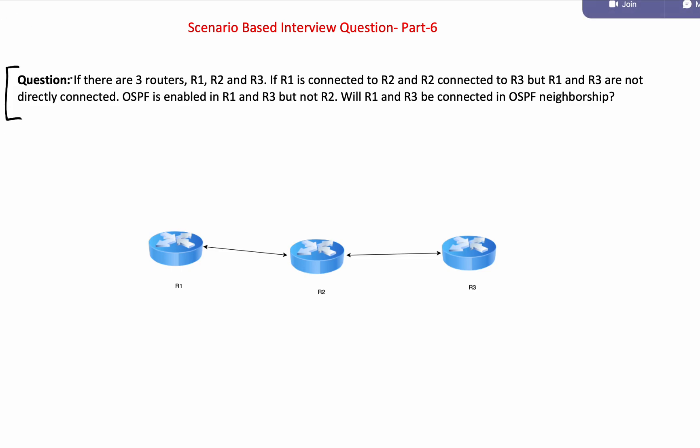Coming to the question: if there are three routers R1, R2 and R3, if R1 is connected to R2 and R2 is connected to R3 directly, but R1 and R3 are not connected directly. So we have three routers - this is connected to this one, this one is connected to this one, but these two are not connected directly.